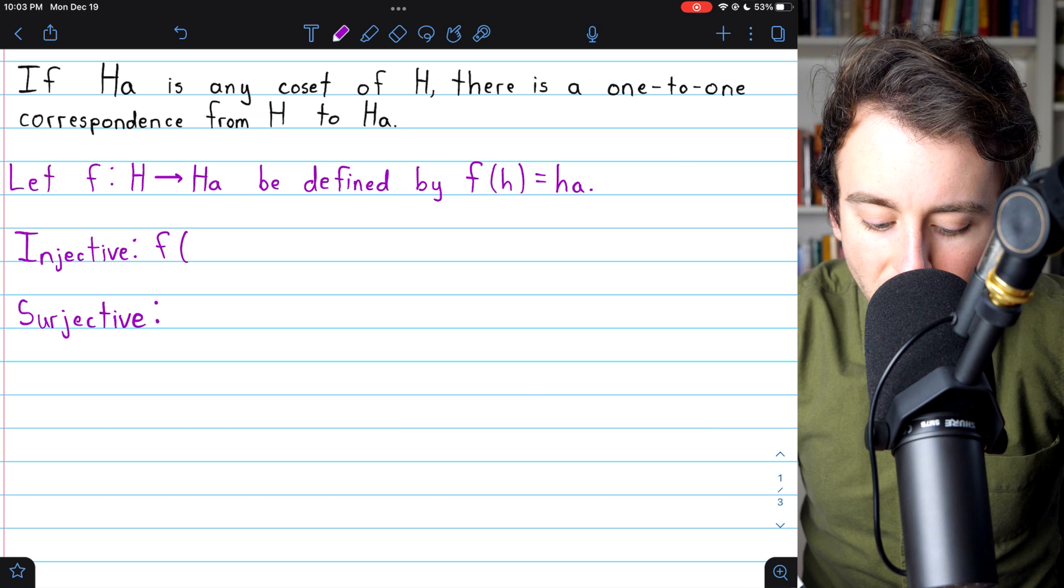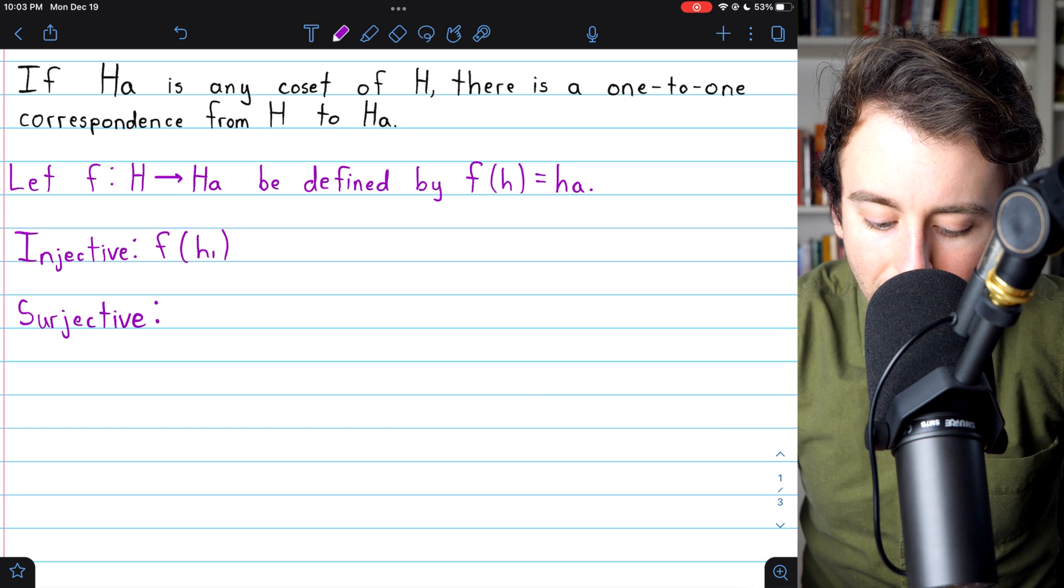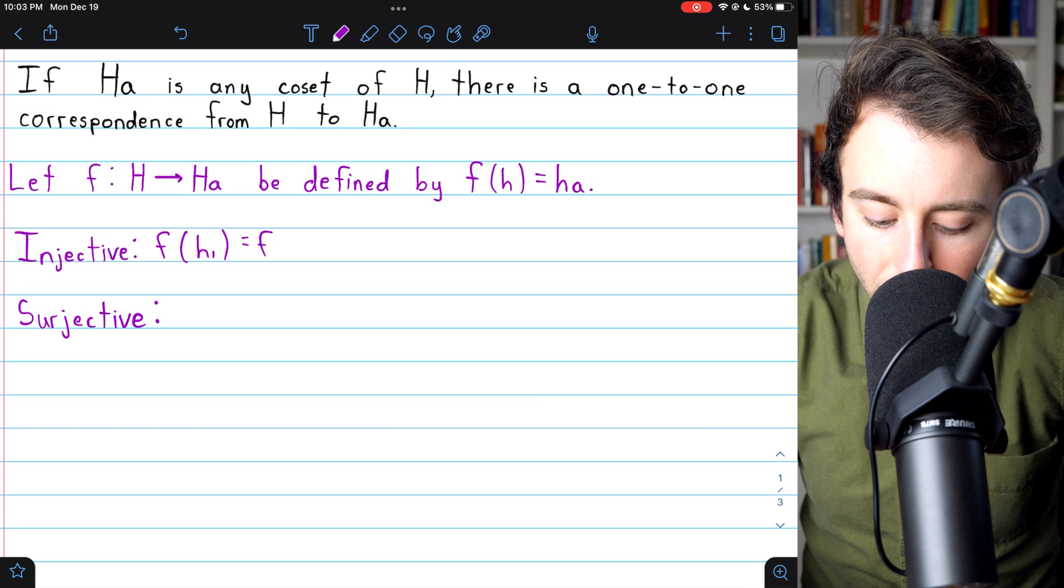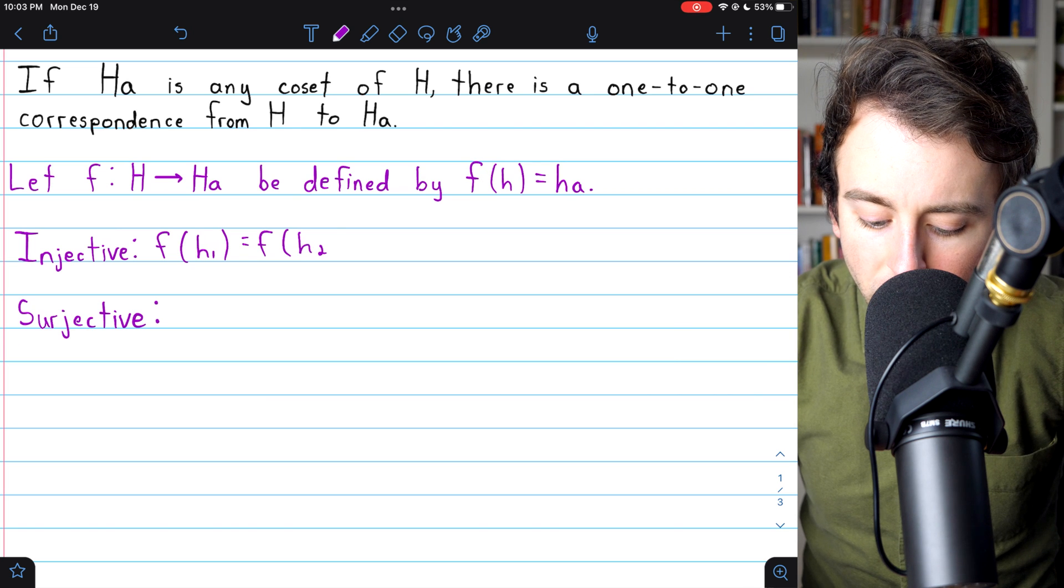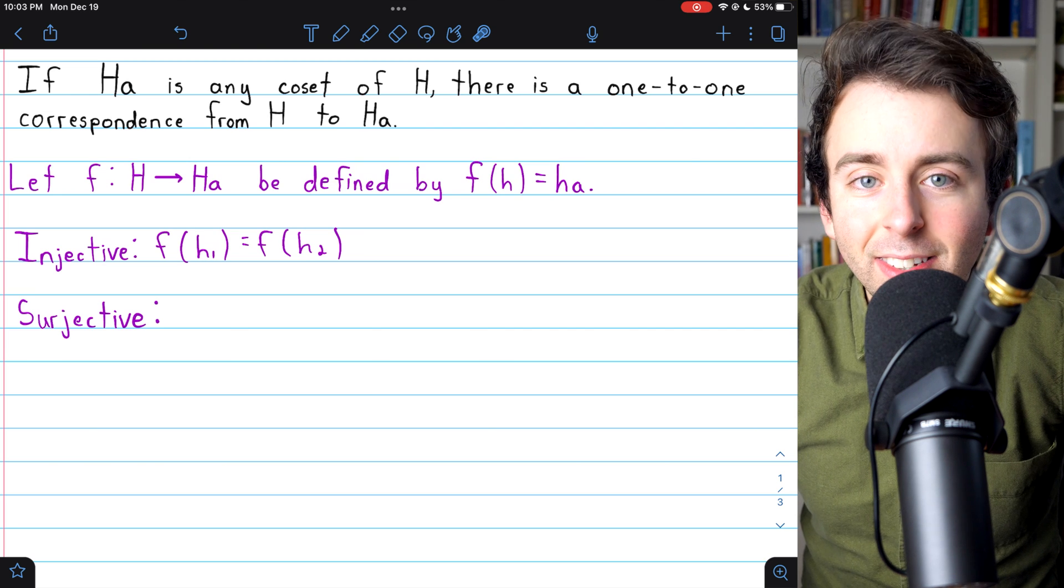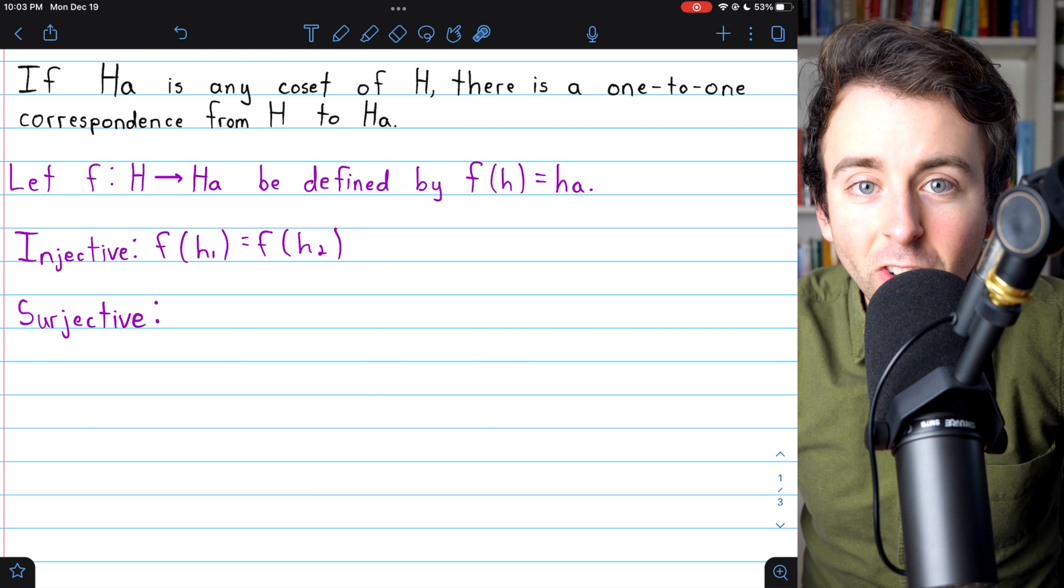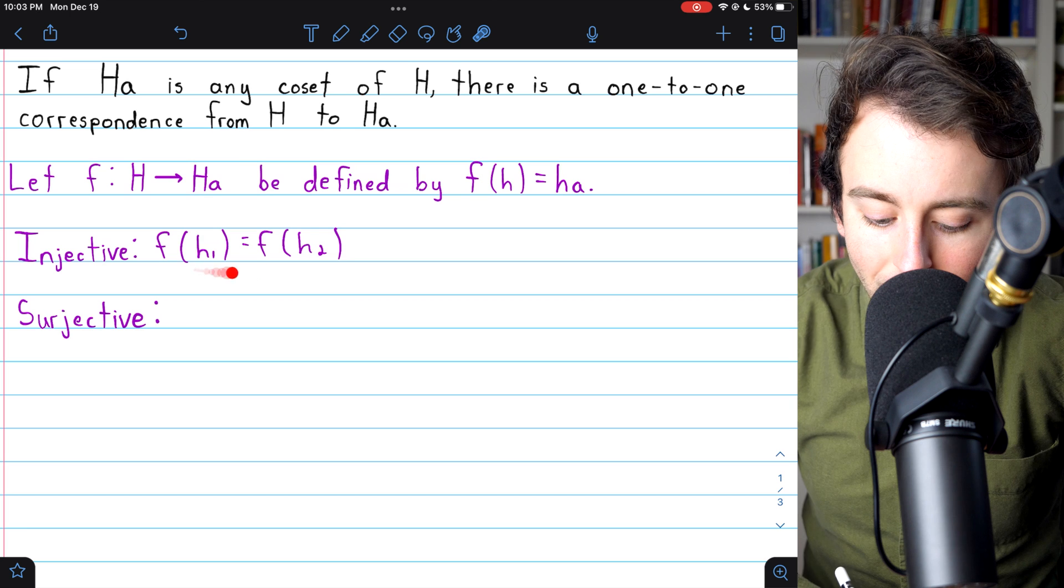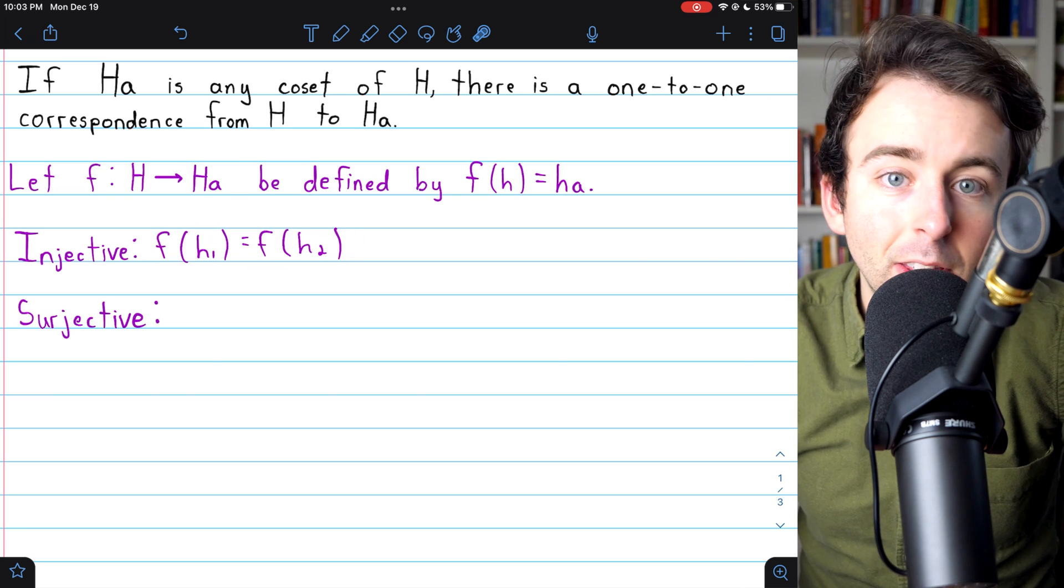To prove our function F is injective, we will let F(h₁) equal F(h₂). For a function to be injective, distinct elements of the domain must have distinct images in the range. So if we have these two elements of the range that are equal, F(h₁) and F(h₂),